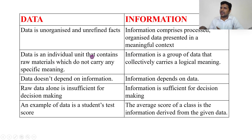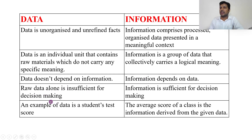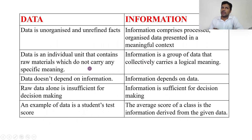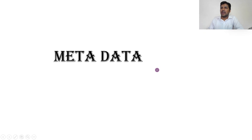Data doesn't depend on information, but information depends on data. Raw data alone is insufficient to take a decision — you have to process it, summarize it, or arrange it in a certain order. Information is sufficient to take a decision. For example, a student's test score is data and the class average is information.